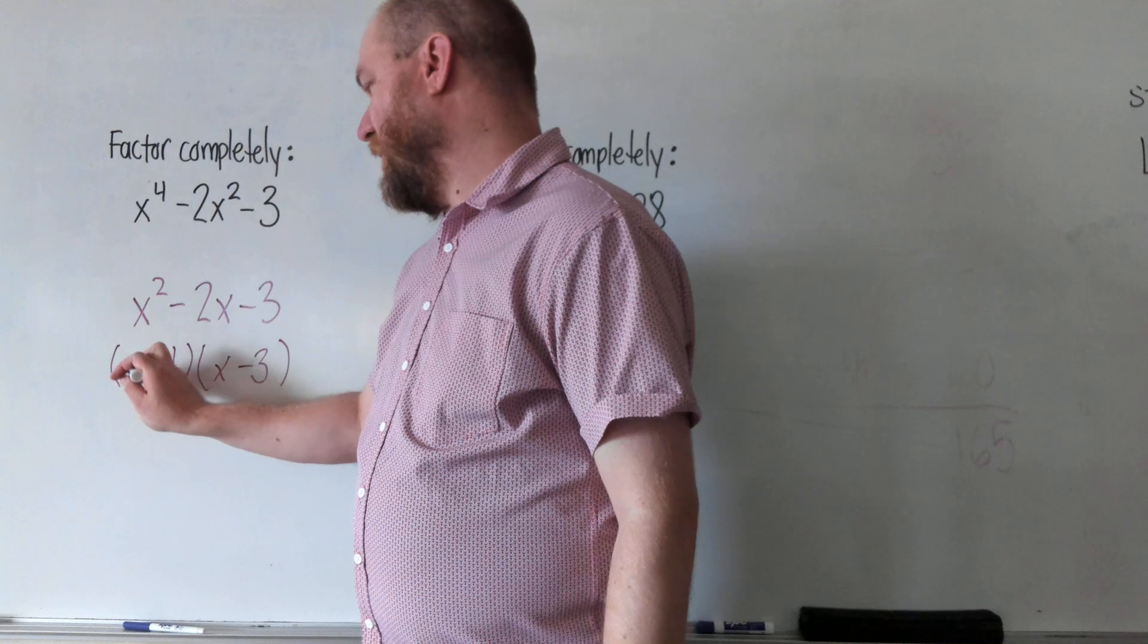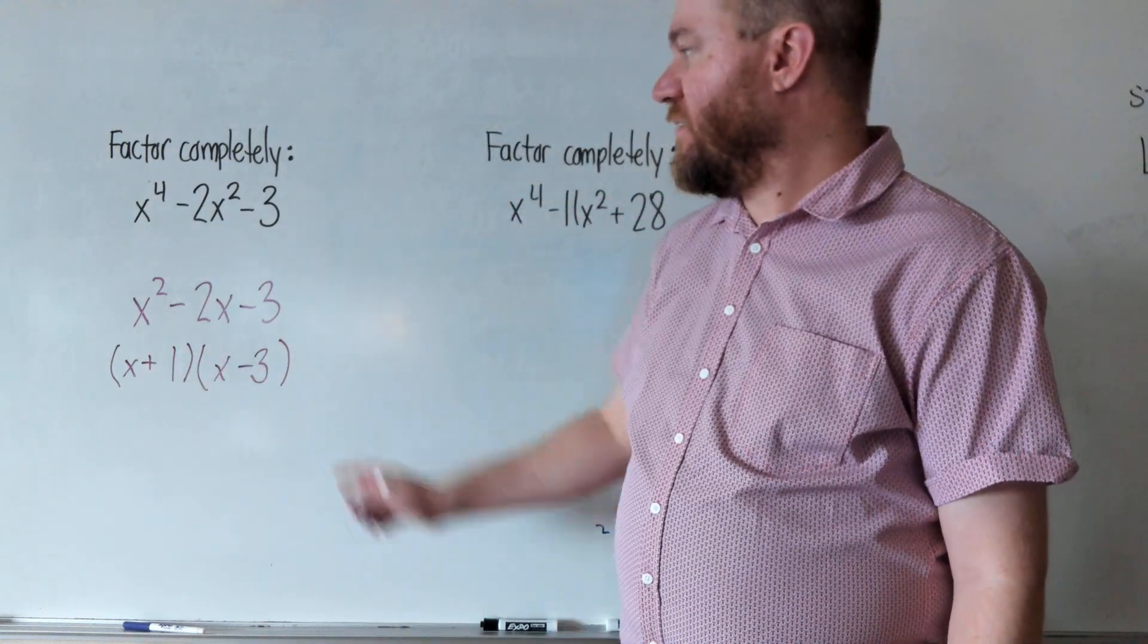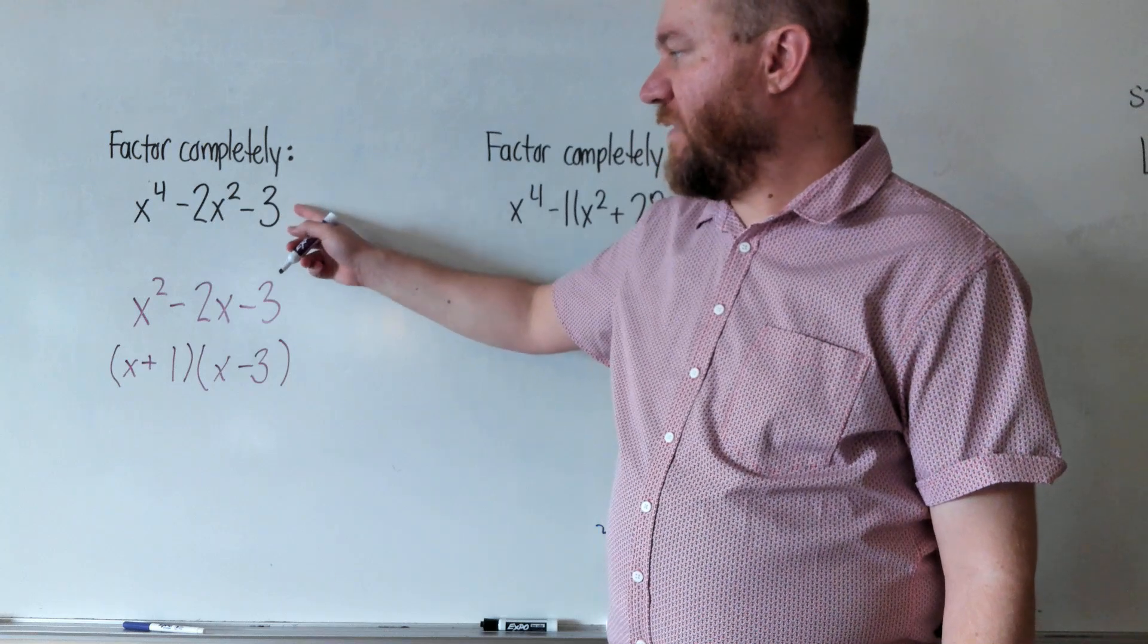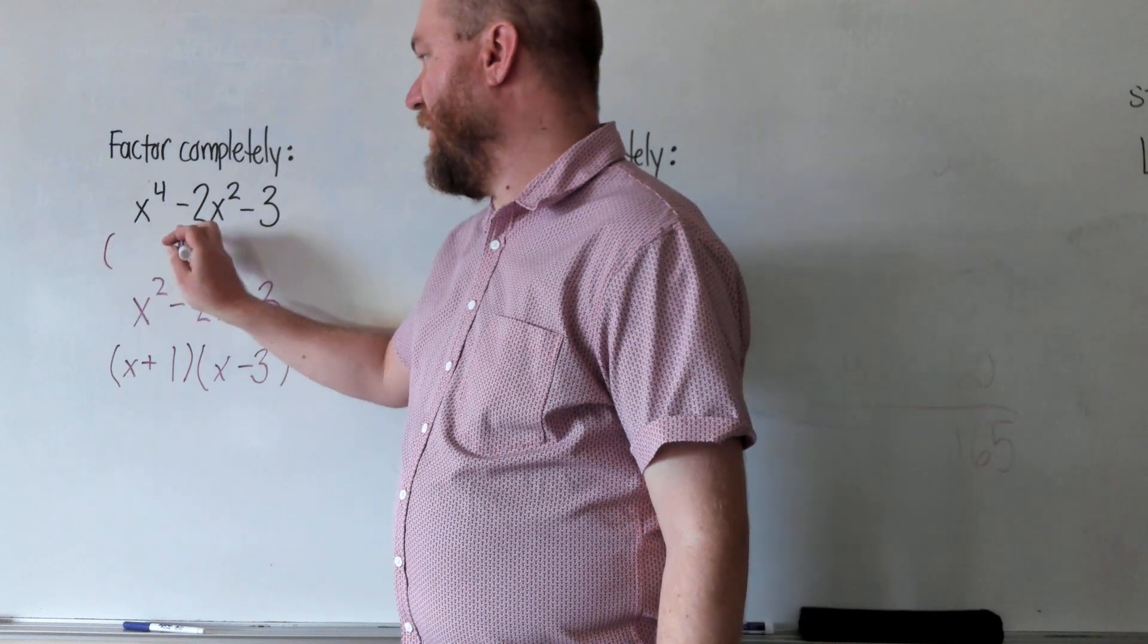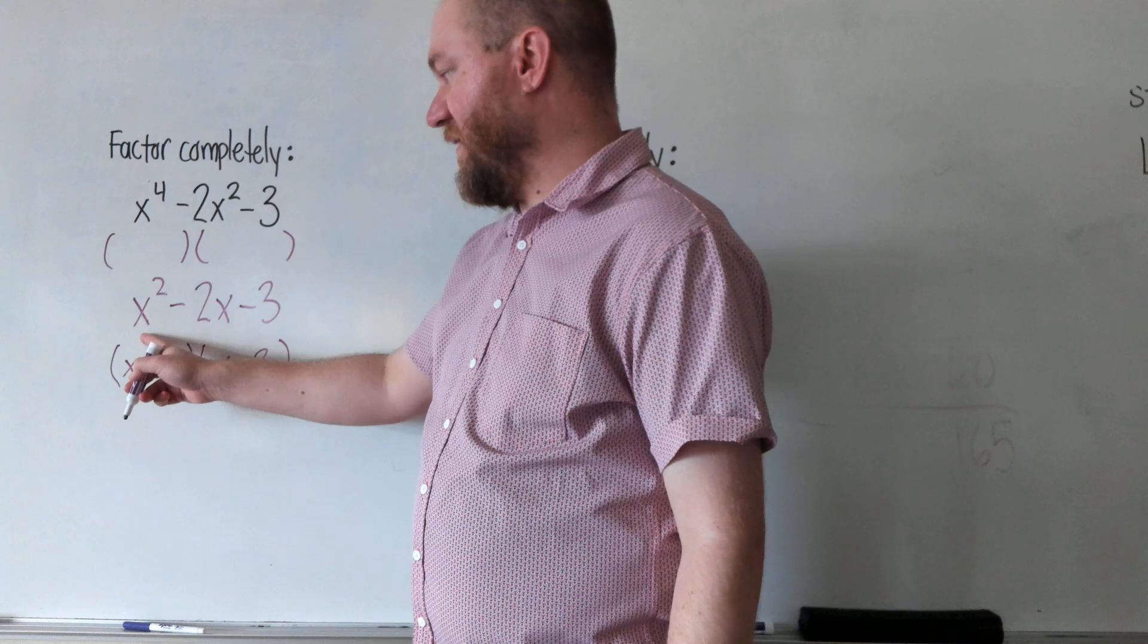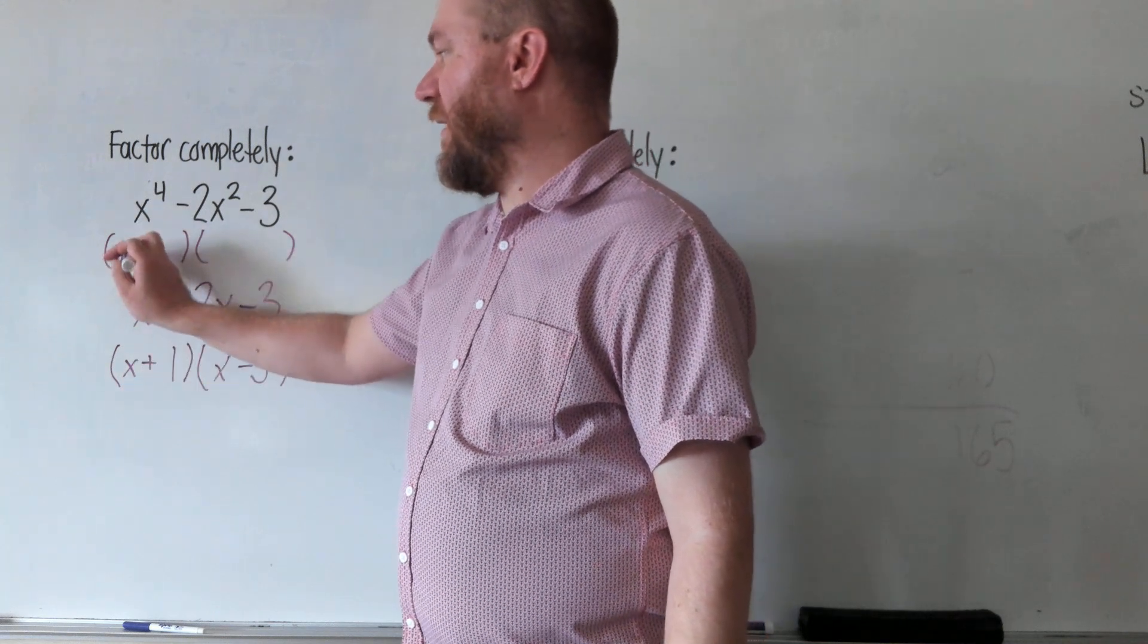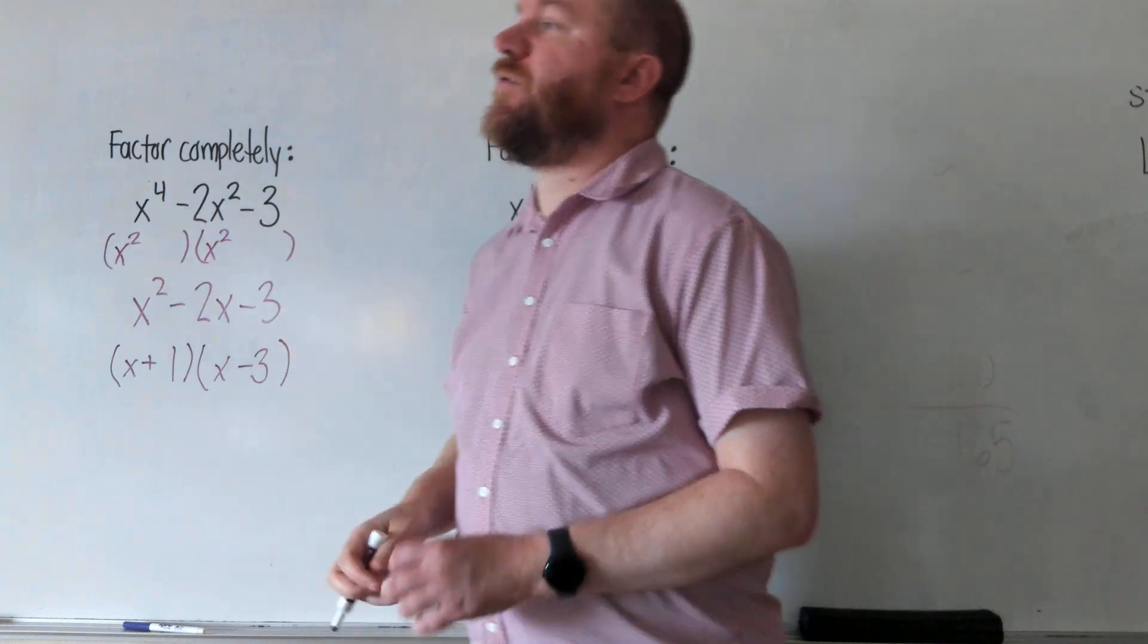And we put an x out front, and that is the factored form of that. So luckily, this problem is the same exact setup. We're going to do two parentheses. Instead of putting x and x to make x squared, we're going to put x squared and x squared, and that will make x to the fourth when multiplied.